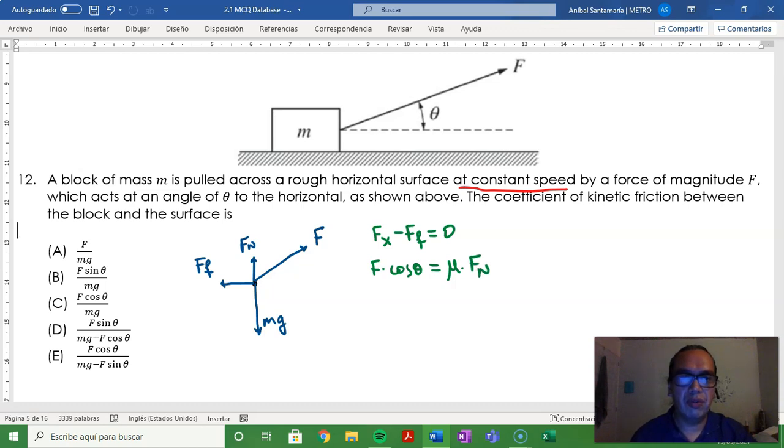Also, the sum of forces along the y-axis have to be equal to zero, so Fy plus Fn minus mg have to be equal to zero, which comes down to the normal force being equal to mg minus F sine of the angle.